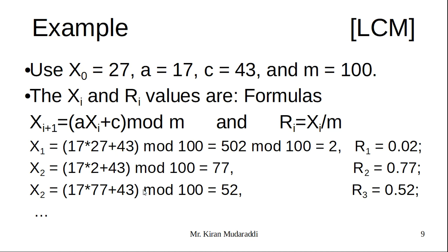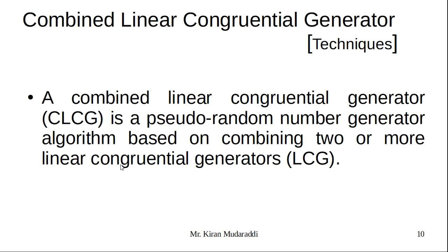The next method is called combined linear congruential method. It is a combination of two or more linear congruential generators. Using that, we are going to generate random numbers. It is more efficient compared to linear congruential method.